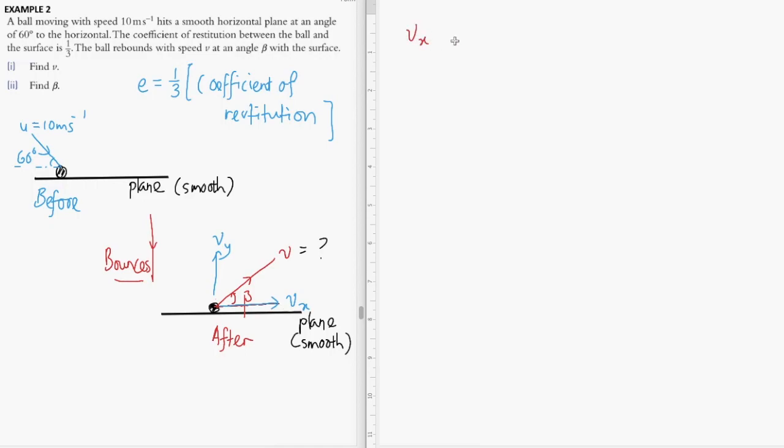So the x-component of the velocity will remain the same as u cos 60. In this case, u is 10, so 10 cos 60. Using a calculator, you should get 5 meters per second, because cos 60 is 0.5.